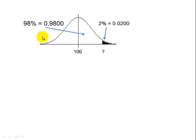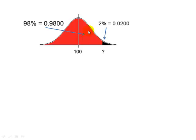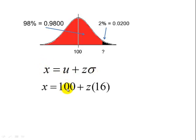And, of course, this is 1 minus 2%, or 98%, 0.9800. So this is the area that we want to look for in table 5. Here's our formula. We know mu is 100, we know the standard deviation is 16. We need to find the z-score that corresponds to 0.9800.